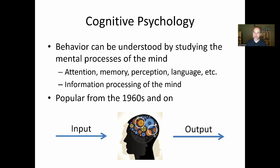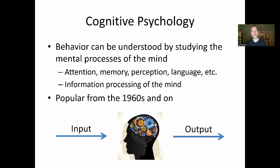That's behaviorism, and you can see where this is heading. The next perspective — cognitive psychology — said: okay, we've been looking at input and output, but we really want to start delving into this black box; we want to understand the mental processes of the mind. Some big examples are attention, memory, and perception. Cognitive psychology became popular in the 1960s and continues today, remaining the main perspective.